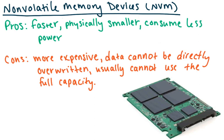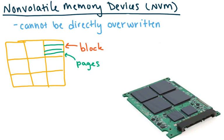The pros of NVMs are that they're faster, physically smaller, and consume less power. The cons are that they're more expensive, data can't be directly overwritten (we'll talk about this), and you usually can't use the full capacity. For example, if you're buying a solid state drive that says 400 gigabytes, the actual space may be larger — like 512 gigabytes — but you can't use that full space.